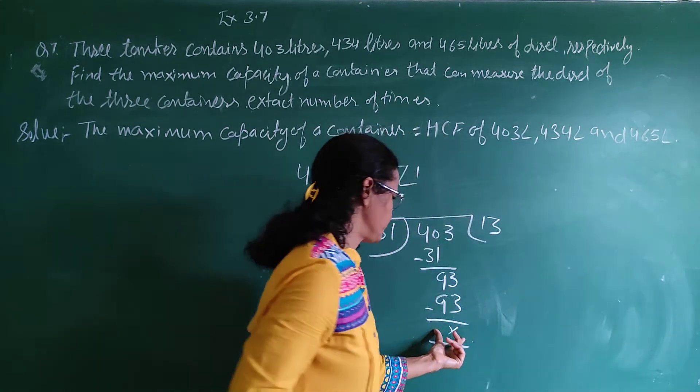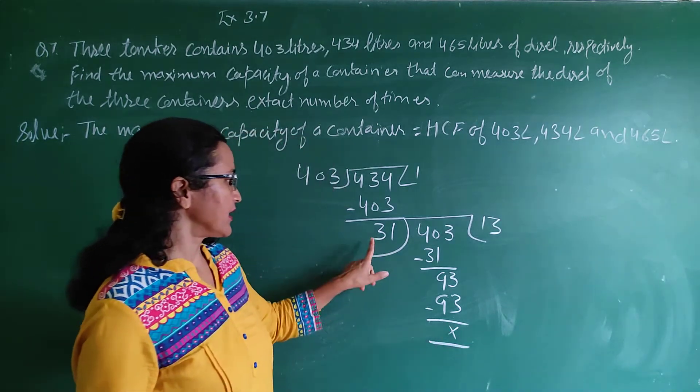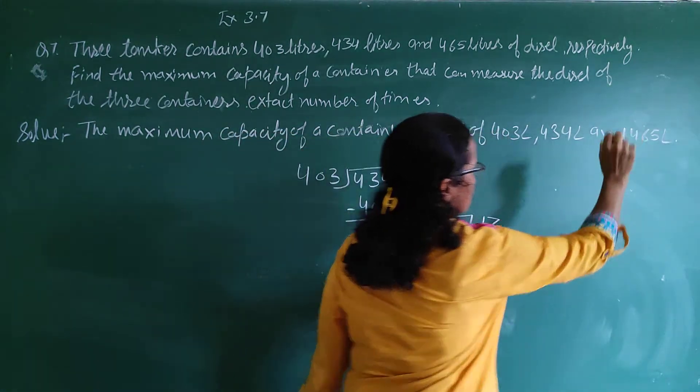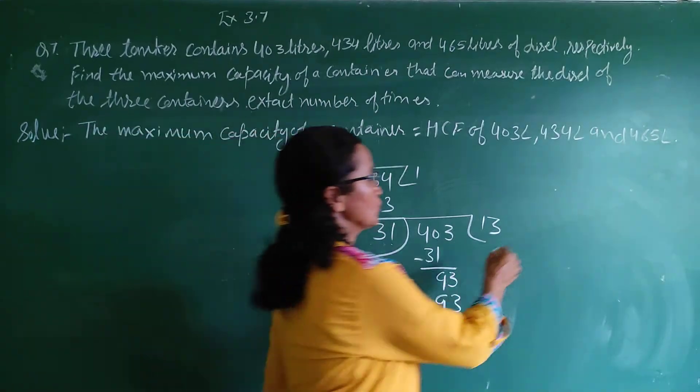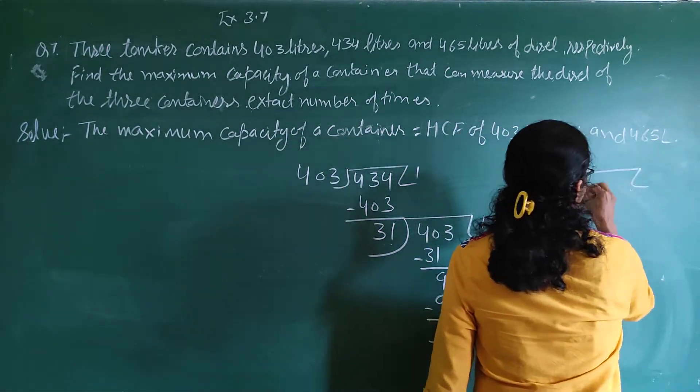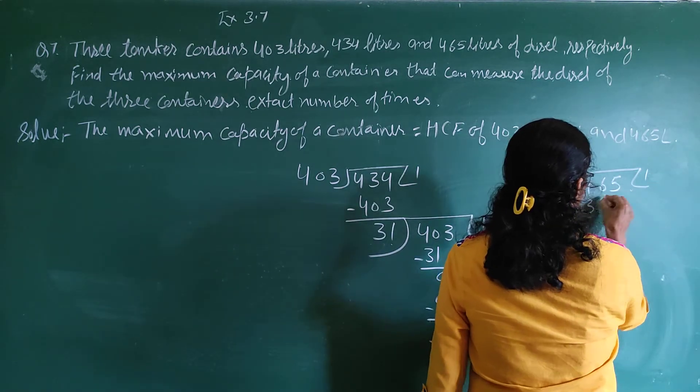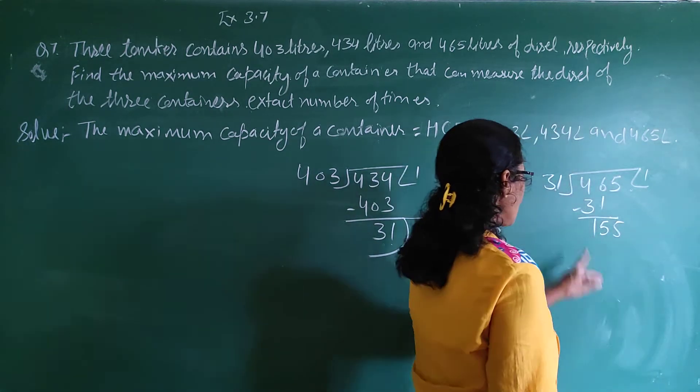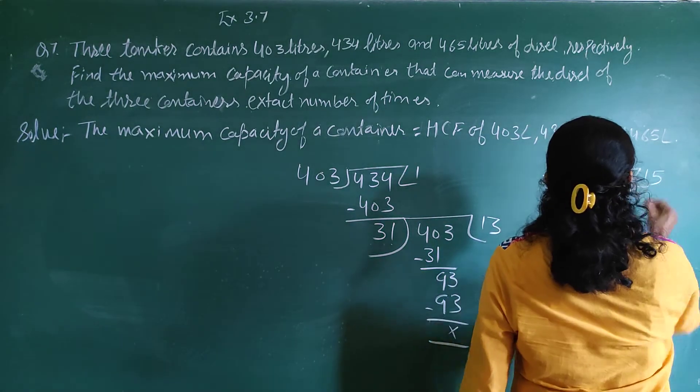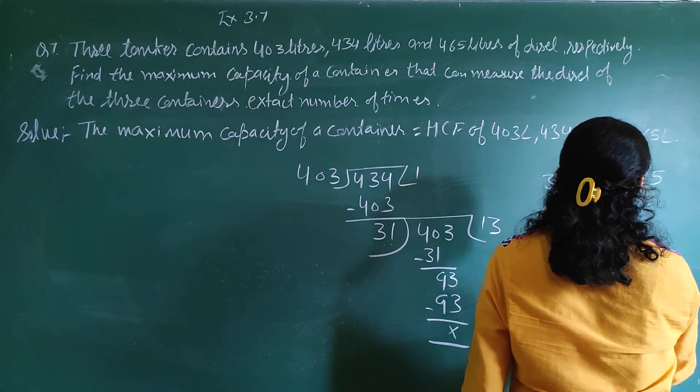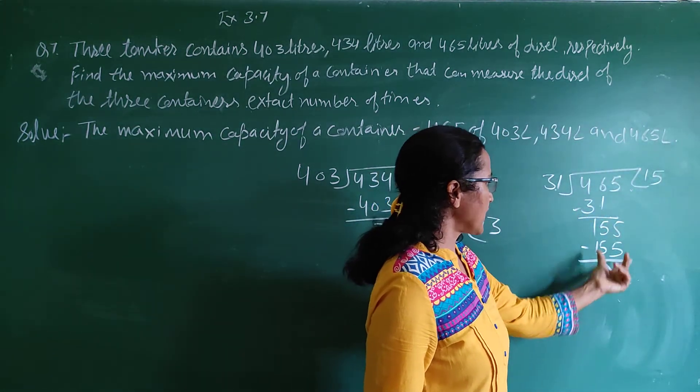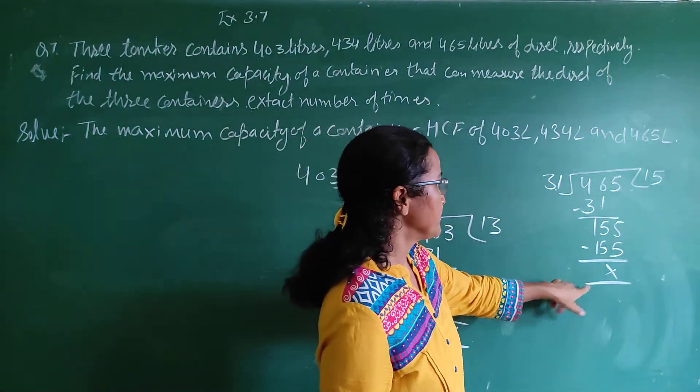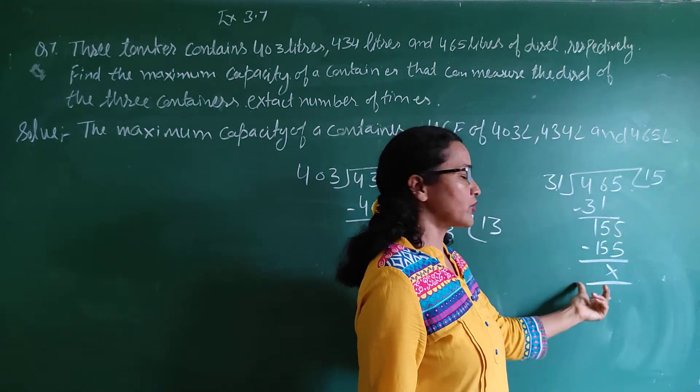Now you have zero remainder, so this 31 is your HCF. Now take 31 divided by 465. Divide by 1, so write here 31 minus, this is your 155. Now take 155. Now divide it by 5, 155 minus will be 0. So 31 is the HCF of all three numbers.